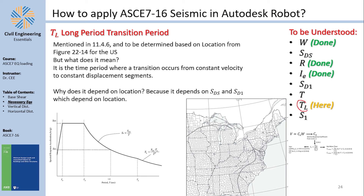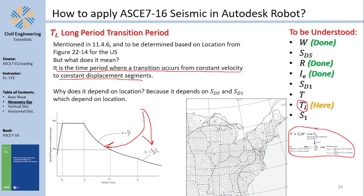TL is the long-period transition period — the period at which the response spectrum transitions from the constant-velocity segment to the constant-displacement segment. TL is location-specific and taken from maps: figure 22-14 for the U.S., or online sources for international locations. More information is in section 11.4.6.